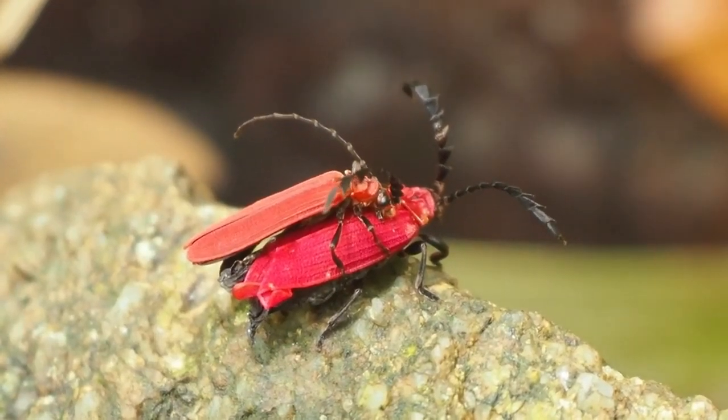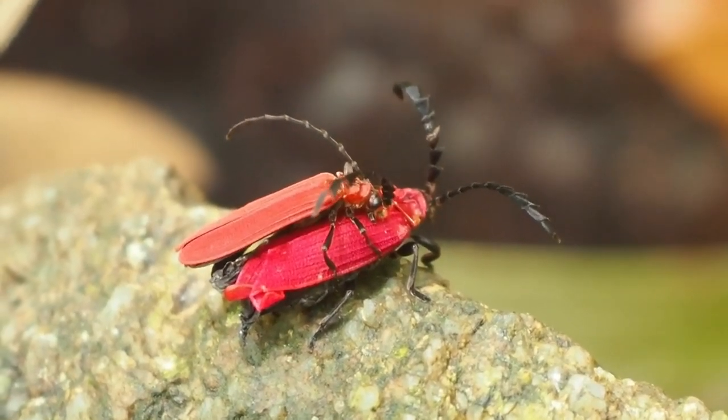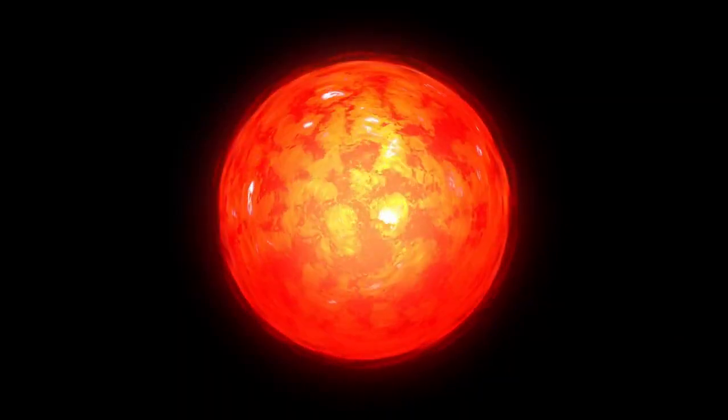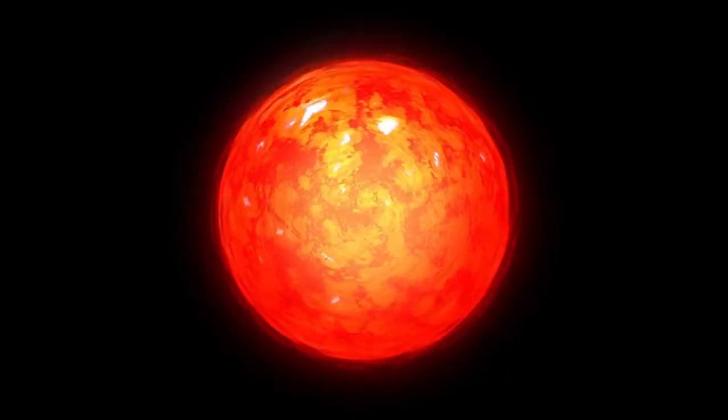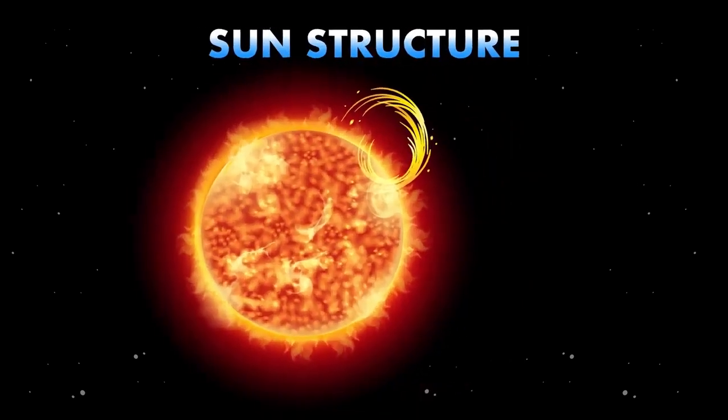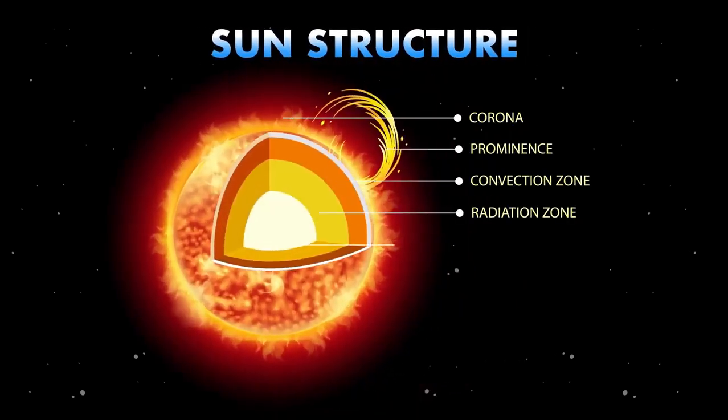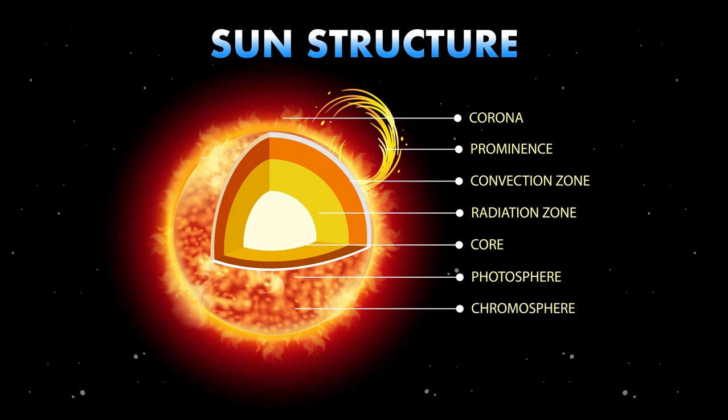Adding to Betelgeuse's mystique is its historical color change. Ancient Roman and Chinese writings suggest that around 2,000 years ago, Betelgeuse was yellow. It was only in the 9th century that Arabic scholars first described it as red. This color shift is a clue to the star's evolutionary path.